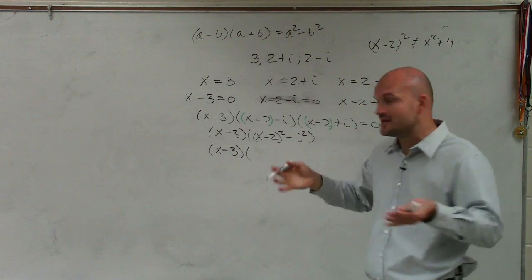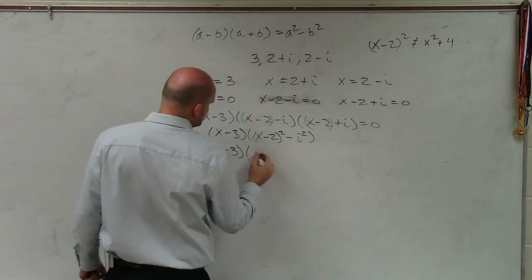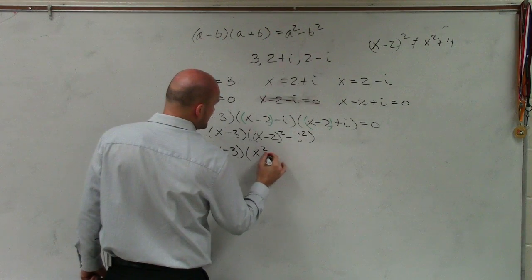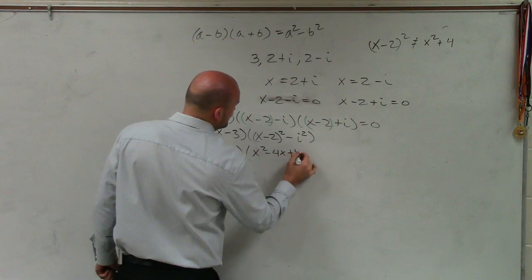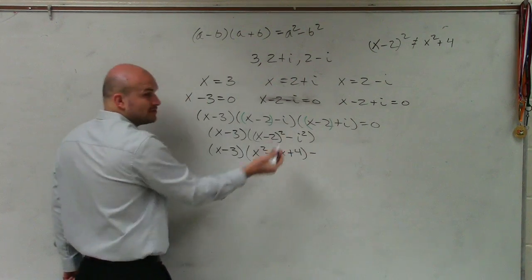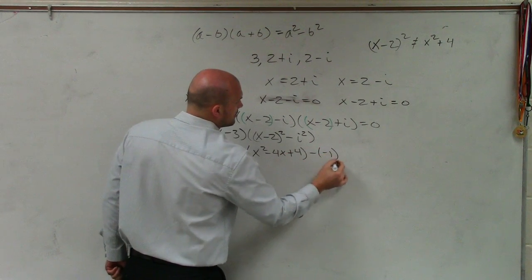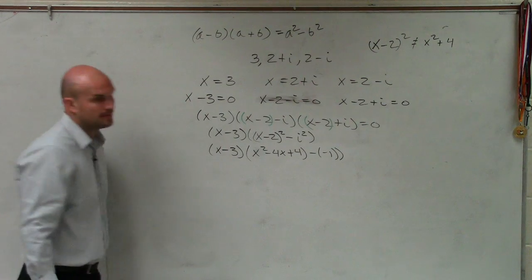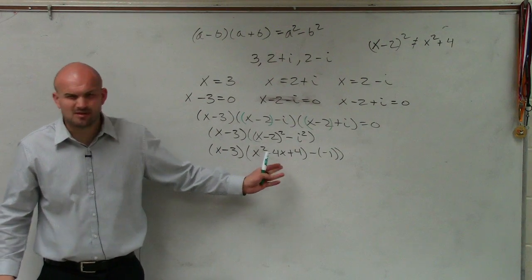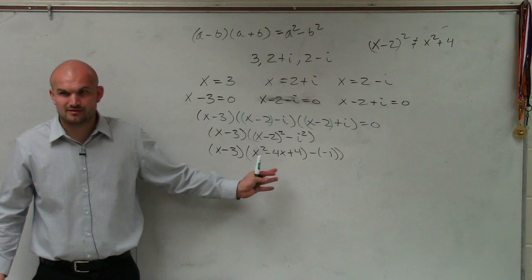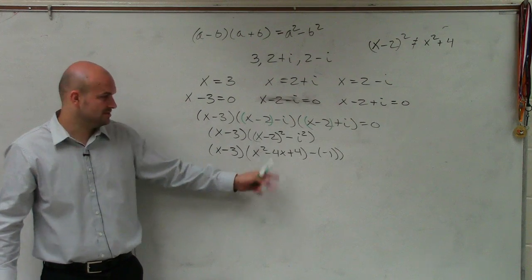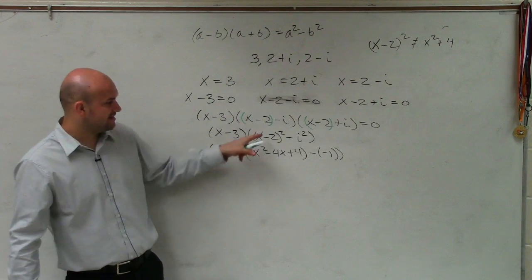You've got to multiply (x - 2) times (x - 2), which I'm going to do, unfortunately, in my head, because I want to get this over: x squared minus 4x plus 4, minus i squared is negative 1. You guys don't need me to multiply (x - 2) times (x - 2). You guys can all do that on a separate sheet.